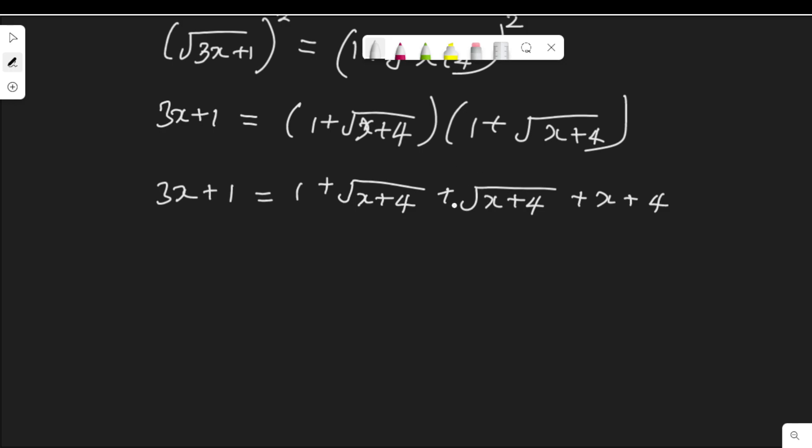These two here can be added together, and this 1 and 4 can be added together. They are like terms. I have 3x+1 = 5 + 2√(x+4) + x.